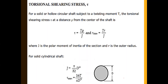Now the formula: for torsional shearing stress τ for a solid circular shaft subject to a twisting moment T, the torsional shearing stress at a distance ρ from the center is τ = Tρ/J, and the maximum shear stress is τ_max = Tr/J. Here J is the polar moment of inertia and r is the outer radius. For a solid circular shaft, the polar moment of inertia J = (π/32) × d⁴, and τ_max = 16T / (πd³).